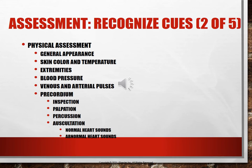You always want to be able to hear the lub-dub, the S1 and S2. Note whether you hear any extra sounds and whether the rhythm is regular. For instance, in a dysrhythmia like atrial fibrillation, the rhythm will not be a regular lub-dub — it will be irregular, with varied spacing between beats.